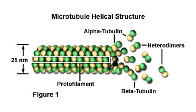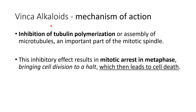When the tubulin units separate from each other, that is called depolymerization. Vinca alkaloids act by inhibiting the polymerization of tubulin — the assembly of microtubules — which is an important part of the mitotic spindle. This inhibitory effect results in the arrest of mitosis during metaphase, so the cell does not divide further, leading to cell death.